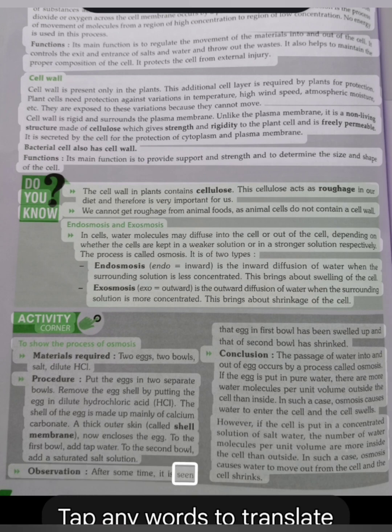Observation: After some time, it is seen that egg in first bowl has been swelled up and that of second bowl has shrinked. Conclusion: The passage of water into and out of egg occurs by a process called osmosis. If the egg is put in pure water, there are more water molecules per unit volume outside the cell than inside. In such a case, osmosis causes water to enter the cell and the cell swells.